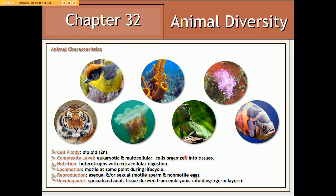With regards to nutrition, all animals are heterotrophs and exhibit extracellular digestion — in other words, digestion within a body cavity. With regards to locomotion, all animals are motile at least at some point during their life cycle. They can reproduce asexually or sexually. And with regards to their development, all animals arise from specialized embryonic cell layers known as germ layers, something we'll be taking a closer look at later in this presentation.